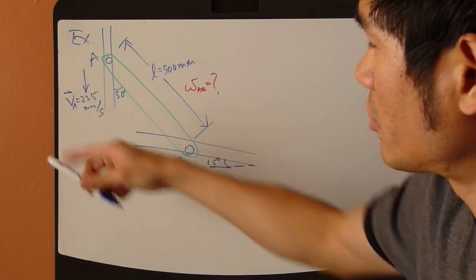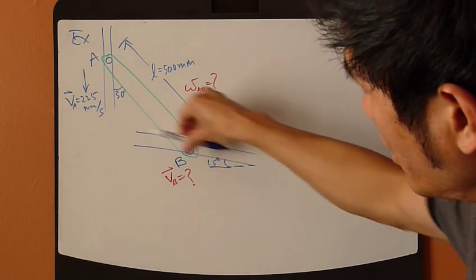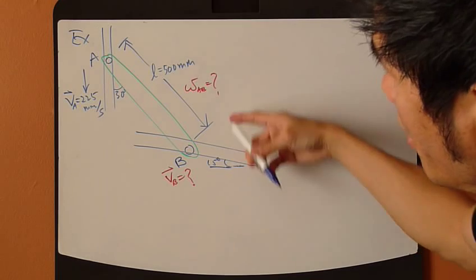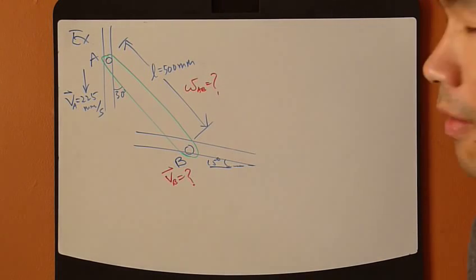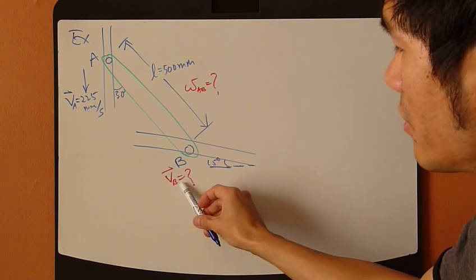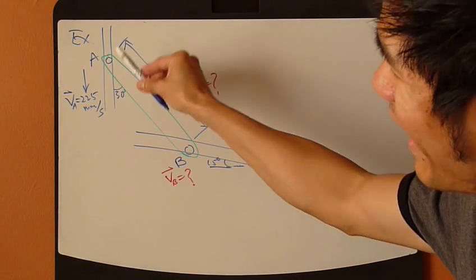The velocity of A is given, 225, and this slot right here is at 15 degree angle, and AB is 500 millimeters long. You're asked to find the velocity of B, as well as the angle of velocity of AB at this instant.